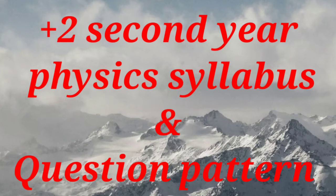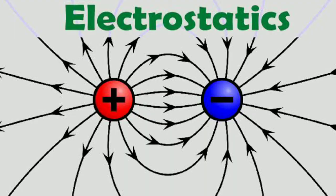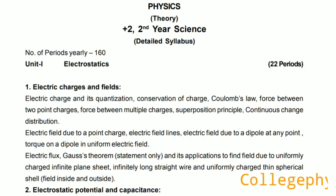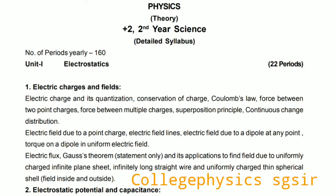In Unit 1, Electrostatics, there are two chapters. The first is Electric Charges and Fields. We discuss electric charge, its quantization, conservation of charge, Coulomb's law, force between two point charges, force between multiple charges, superposition principle, and continuous charge distribution.